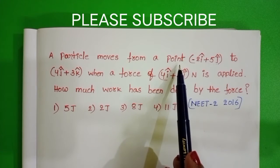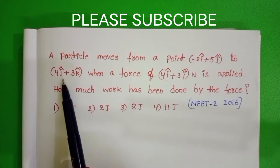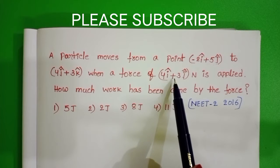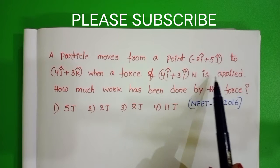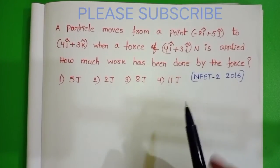A particle moves from a point -2î + 5ĵ to 4ĵ + 3k̂ when a force of 4î + 3ĵ newton is applied. How much work has been done by the force?